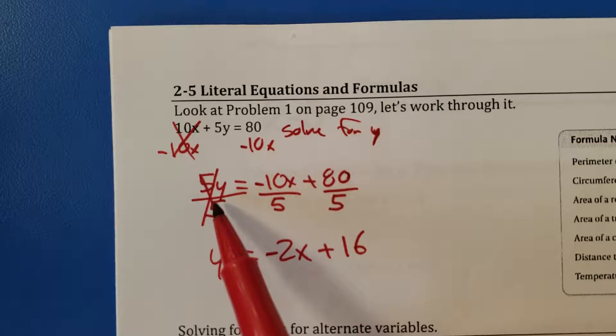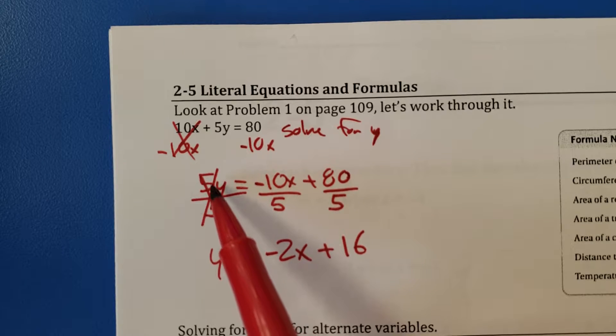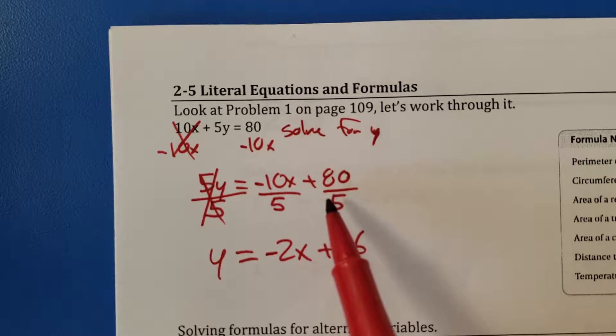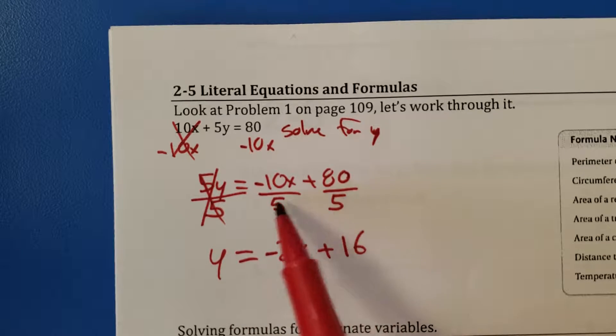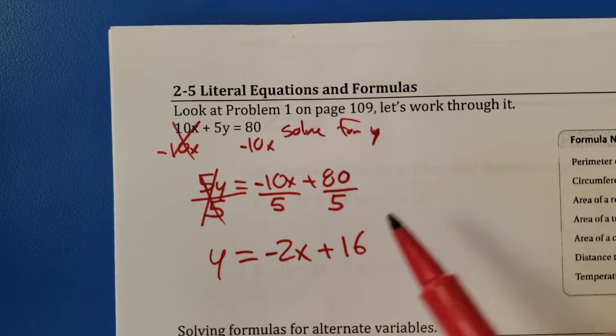Then I'm getting rid of this 5 by dividing by 5. Now, if I divide the left by 5, I've got to divide the right by 5. Some of you are like, well, you did it twice over here. Yeah, I'm dividing each of them by 5 because I kind of skipped a step.